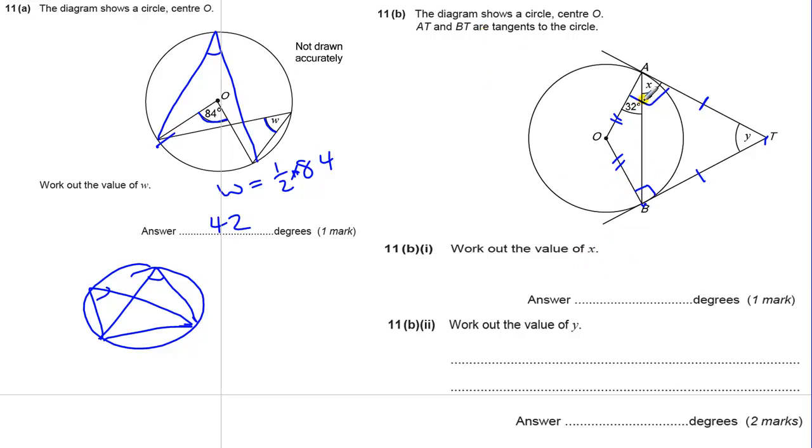So working out the value of x, because this is 90 degrees, 32 plus x is 90, so this is going to be 90 minus 32, which is 58 degrees.